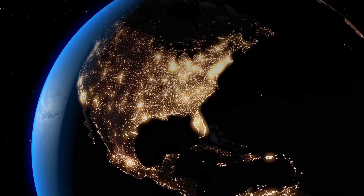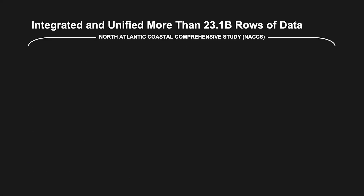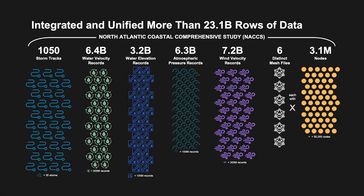C3AI integrated and unified six disparate types of SeaStorm MS data derived from historical extratropical storms for the entire U.S. eastern seaboard. The data integrated and unified included 1,050 tropical storm tracks, 6.4 billion water velocity records, 3.2 billion water elevation records, 6.3 billion atmospheric pressure records, and 7.2 billion wind velocity records.